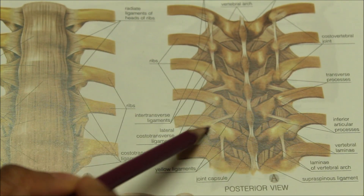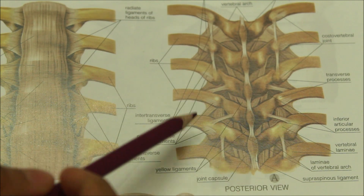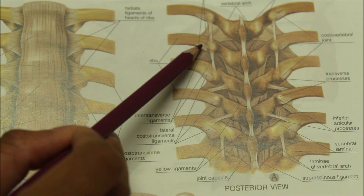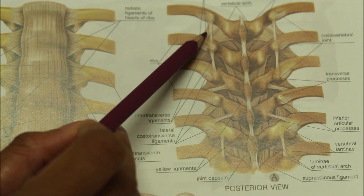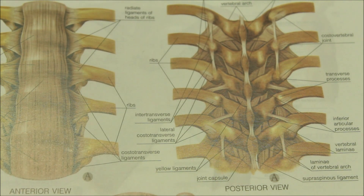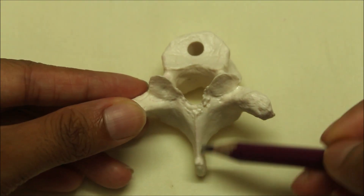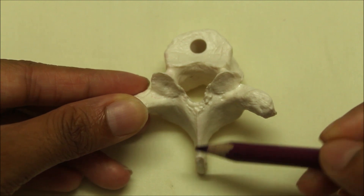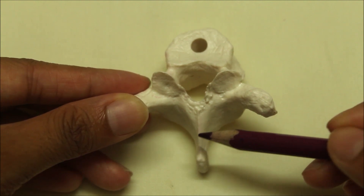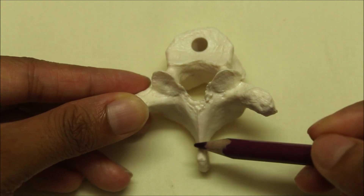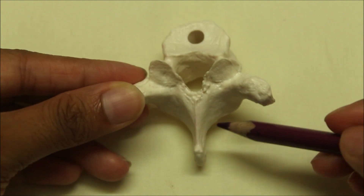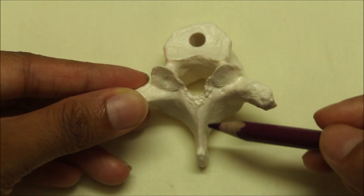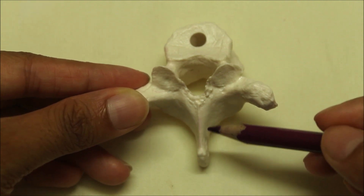The visible attachments include the lateral costal transverse ligament, the intertransverse ligament, and the superior costal transverse ligaments. The spinous process gives attachment to the supraspinous and interspinous ligaments, and also gives attachment to several muscles including the trapezius, rhomboids, latissimus dorsi, serratus posterior superior, serratus posterior inferior, and many deep muscles of the back.